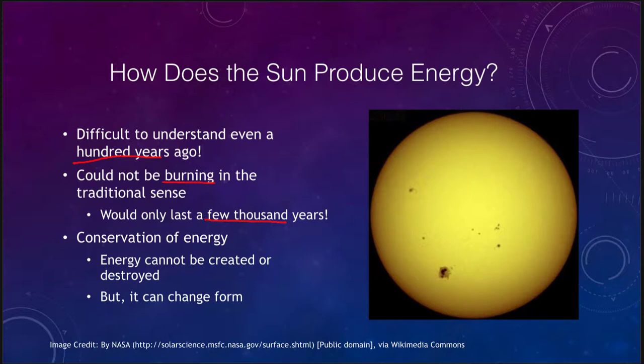We also know that there is the conservation of energy and that energy cannot be created or destroyed but it can change its form. We can convert energy from one form to another, for example gravitational energy into heat energy. Burning is one way of changing forms of energy from a chemical potential energy into heat energy, for example when we are burning coal.